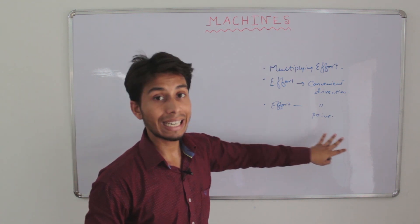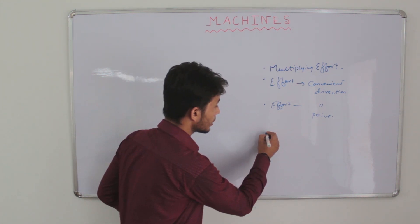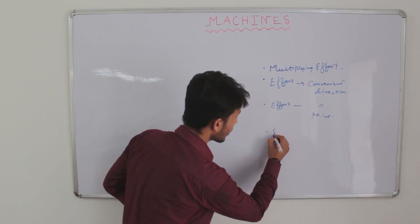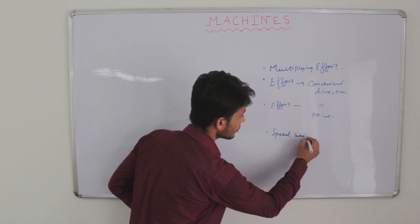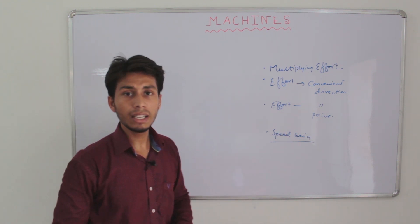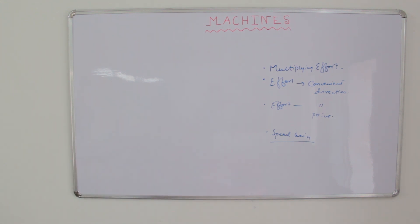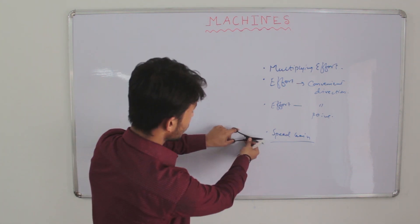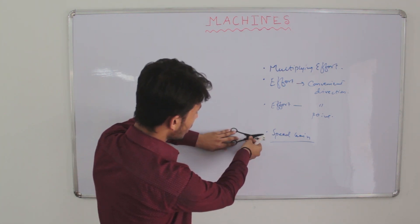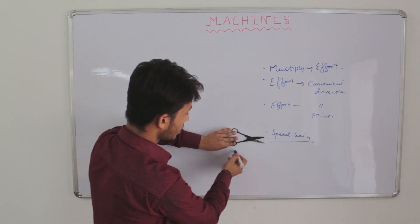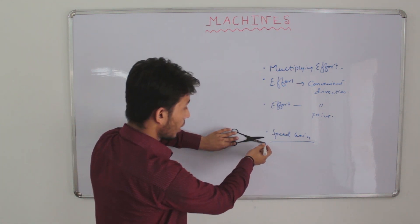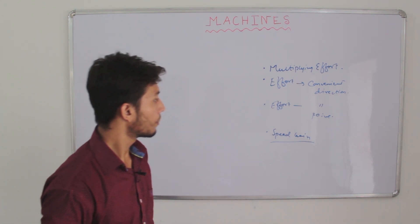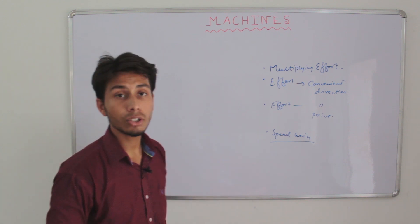And if a machine is not able to help in these three ways, it can also give us a speed gain. For example, using a pair of scissors to cut cloth — we have a fulcrum point, a point where we apply effort, and a point where the load acts. We will come to this later. So these are the four benefits of a machine.